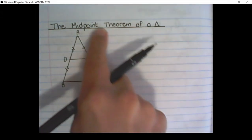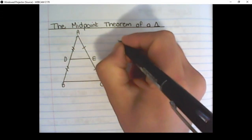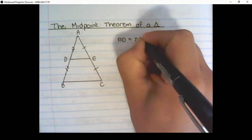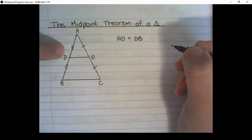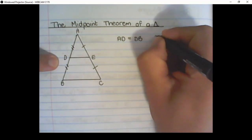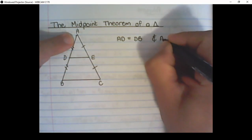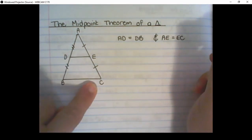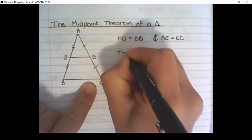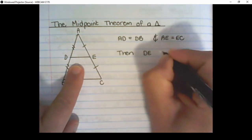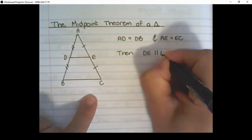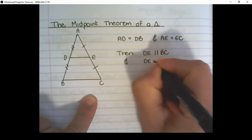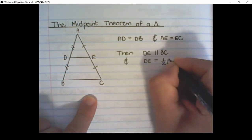What the midpoint theorem states is, if AD is equal to DB and AE is equal to EC, then we have the line DE parallel to BC, and DE is equal to half the length of BC.